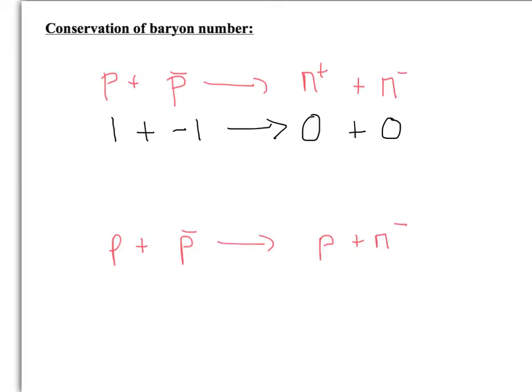So whatever kind of pion you have, or kaon for instance, is going to have a baryon number of zero. Because it's not a baryon, so it can't have a baryon number. So again, we collect those together. So one minus one gives you zero, and that goes to zero. So your baryon number is conserved.